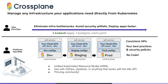What if you could have consistent APIs across your dev, staging, and prod environments that have your best practices and security policies baked in — and you can do all of this without any code, just using idiomatic Kubernetes YAML? Your app teams can just use kubectl apply for the infrastructure they need, eliminate infrastructure bottlenecks, avoid security pitfalls, and deploy their apps faster — all with a unified Kubernetes resource model and the ability to use that with GitOps, your pipelines, or anything that works with the Kubernetes API.